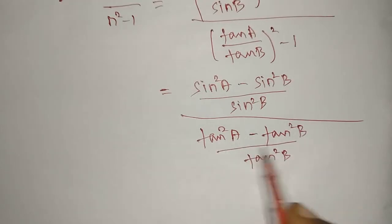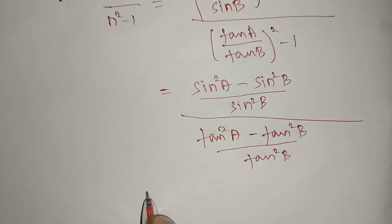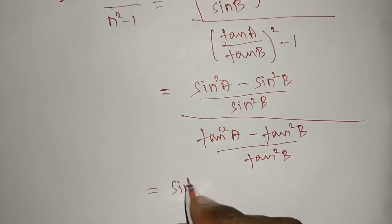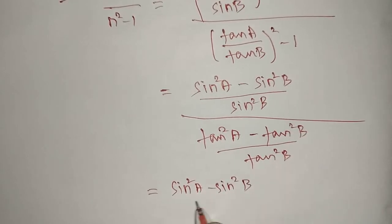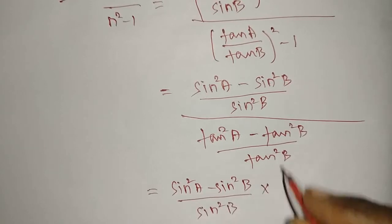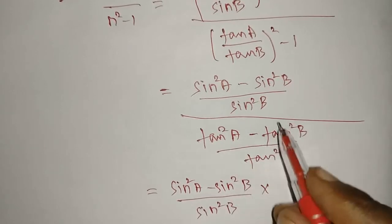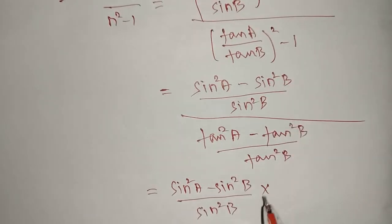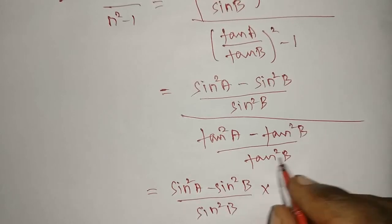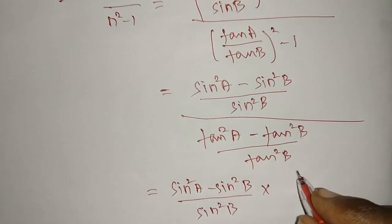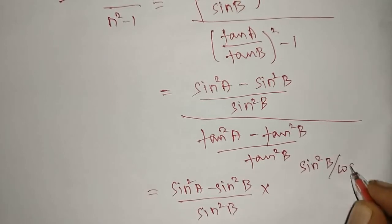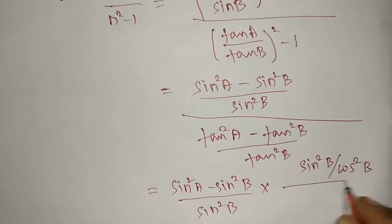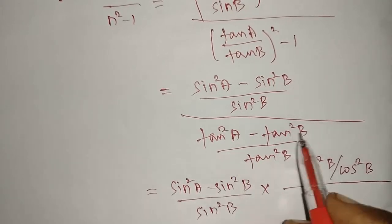We bring the denominator into the numerator — it becomes reciprocal. So tan²B comes to the numerator. Writing tan B as sin B / cos B, we get: (sin²A minus sin²B) divided by sin²B, multiplied by sin²B / cos²B.